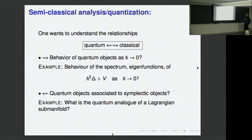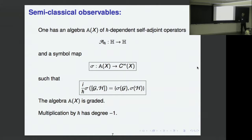Quantization goes the other way: quantum objects are associated with symplectic objects. For example, what is the quantum analog of a Lagrangian submanifold? This relationship really goes both ways and has been a source of many beautiful theorems. I want to talk more precisely about the setting and start making connections with more geometric objects.